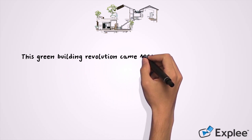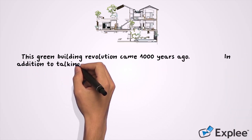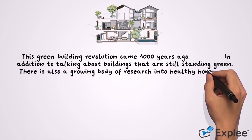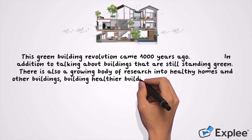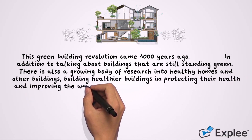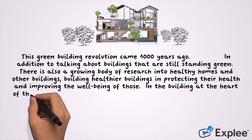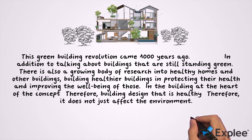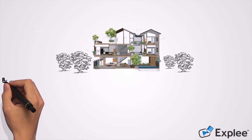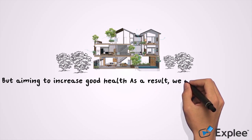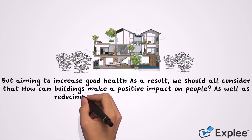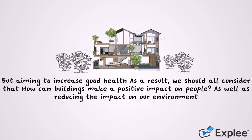This green building revolution came about 1,000 years ago. In addition to buildings that are built green, there is also a growing body of research into healthy homes and other buildings. Building healthy buildings is about protecting the health and improving the well-being of those in the building, at the heart of the concept. Therefore, building design that is healthy does not just affect the environment, but aims to increase good health. As a result, we should all consider how buildings can make a positive impact on people as well as reducing the impact on our environment.